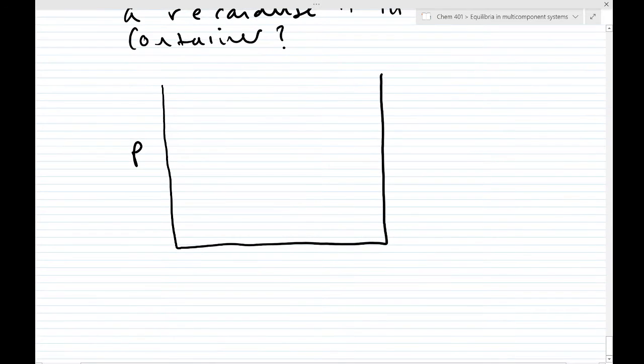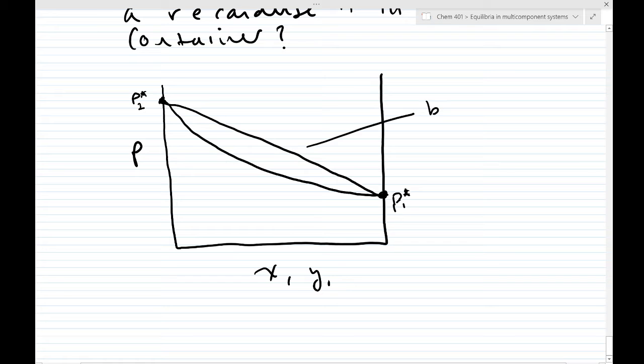We have pressure on the y-axis, and mole fraction of the liquid and of the gas phase. We have here, this would be p2 star, and this would be p1 star, right, the vapor pressure of the pure component. Let's draw a line between these two. It's an okay straight line. I've drawn better. And then the dew point line. So we have the bubble line and the dew line.